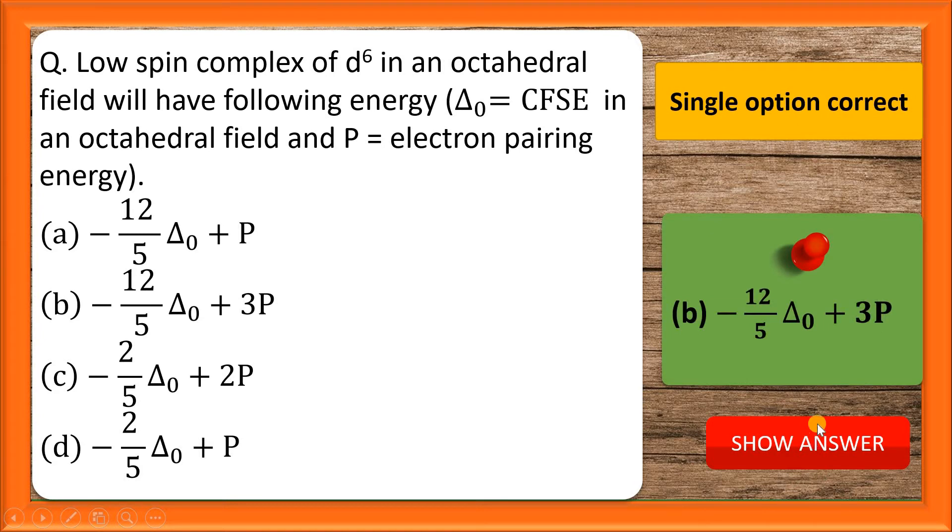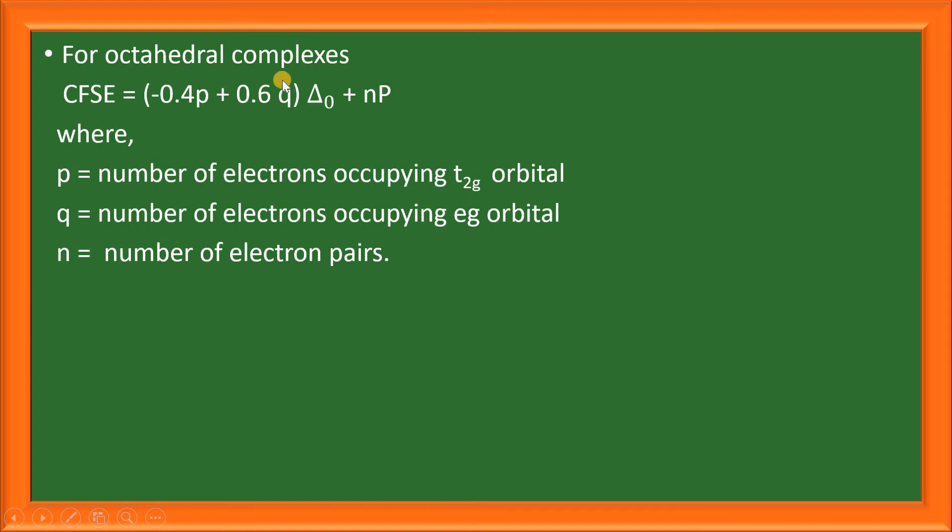Let us see the detailed solution for this question. Students, remember that for octahedral complexes, crystal field stabilization energy is equal to -0.4p plus 0.6q into delta naught plus n into P, where p is the number of electrons occupying t2g orbital, q is the number of electrons occupying eg orbital, and n is the number of electron pairs.